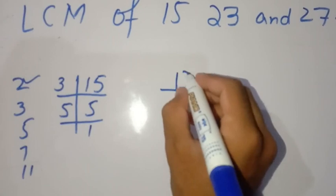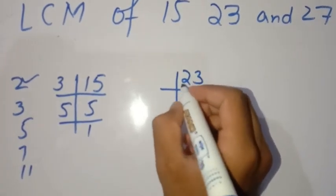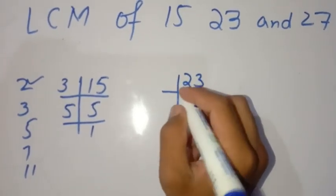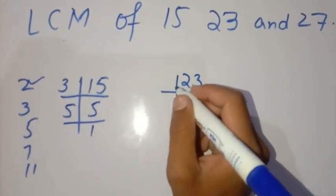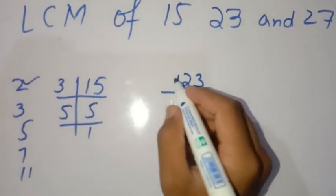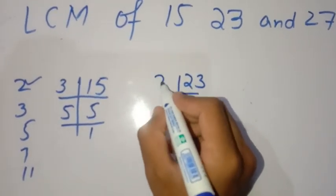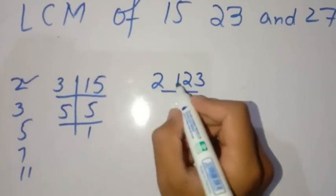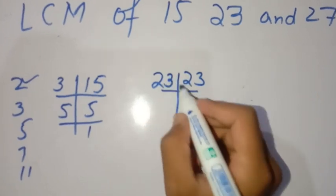Now we find the prime factors of 23. Since 23 is a prime number, it is only divisible by 1 and 23. So we divide 23 by 23.